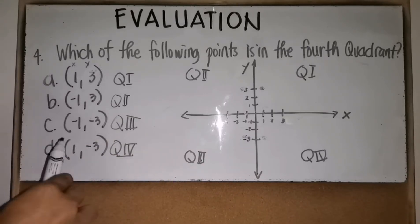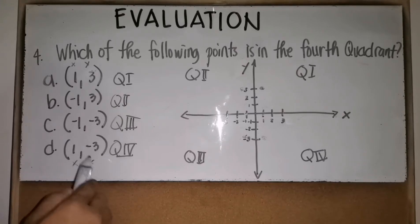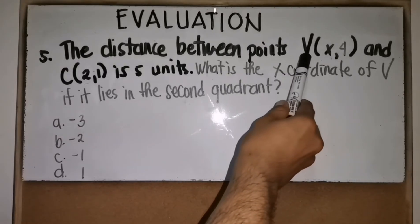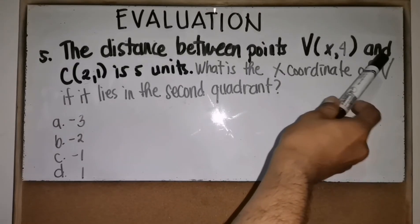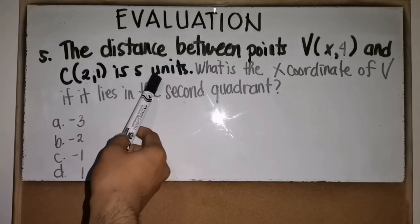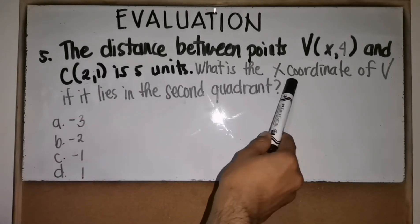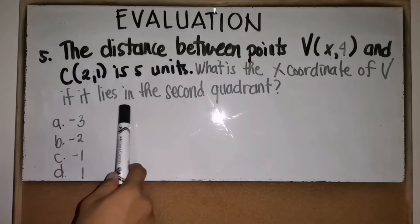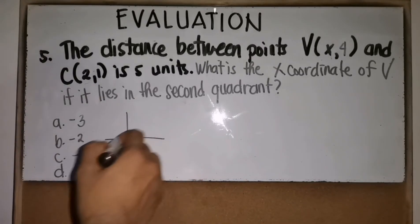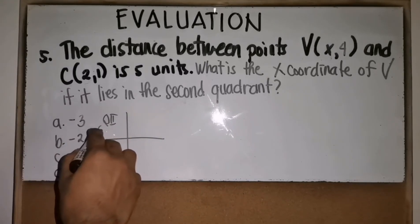The correct answer is D. In the fourth quadrant, the x-coordinate is positive and the y-coordinate is negative. Number five: the distance between point V at (x, 4) and point C at (2, 1) is 5 units. We need to find the x-coordinate of V if it lies in the second quadrant. Since the second quadrant has a negative x, the answer must be a negative number.